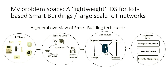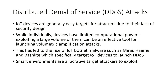This is just the general overview of a smart environment or smart building tech stack. You've got the IoT layer, the network layer — which IoT devices use to send information up to the cloud — where a building automation system will then process all that information to intelligently manage the building's operations. It includes quite a few applications, such as energy management or remote control.